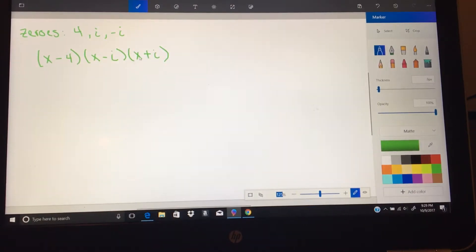Easiest thing to start with is multiplying these two binomials, x minus i, x plus i, because we're going to go x squared plus xi minus xi, and then minus i squared.